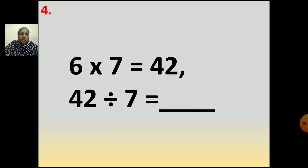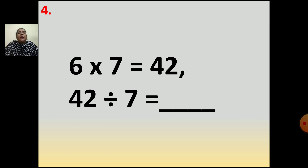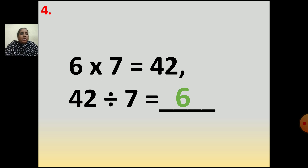Now the fourth question: 6 multiplied by 7 is equal to 42. That is, if you say the table of 6, 6 sevens are 42. And if you divide 42 by 7, what is your answer? You have to see in the table of 7 when you get 42. Your answer is 6. So 42 divided by 7 is equal to 6.